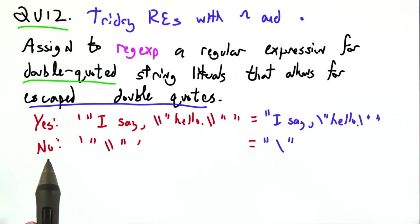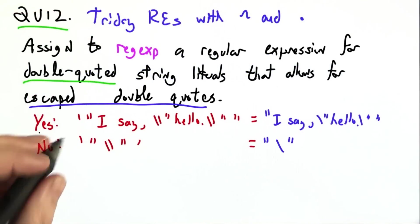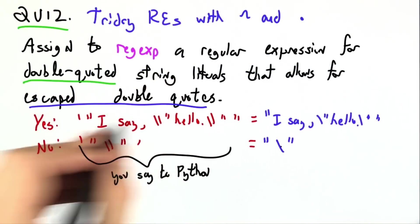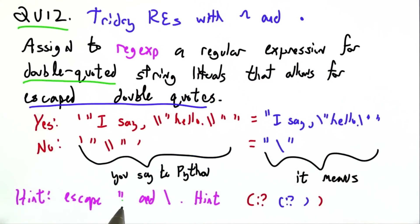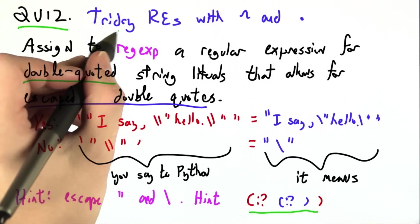So here, just to remind you, I've written out a positive example and a negative example. On the left is what you'd have to say to Python, and on the right is what it means. And the big hints are that you'll probably want to escape the double quotes and the backslash, just like we did here. And you may want to consider having parentheses nested inside other parentheses. This one's tricky. Good luck.